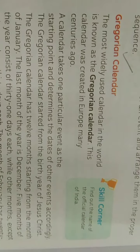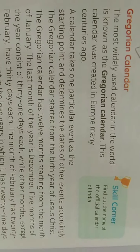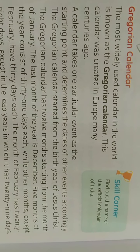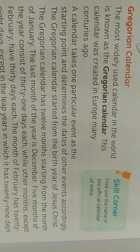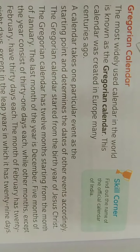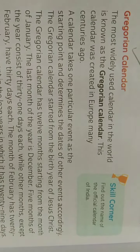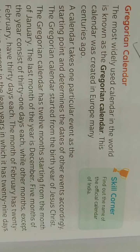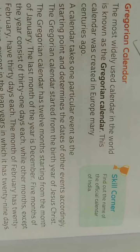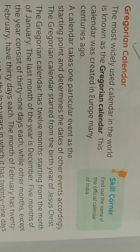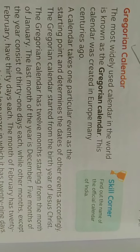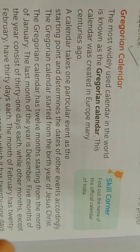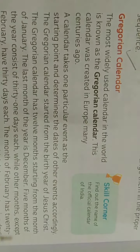It was created in Europe many centuries ago — it was a very long time ago in Europe. That is the Gregorian calendar. A calendar takes one particular event as the starting point. Which event is the starting point?